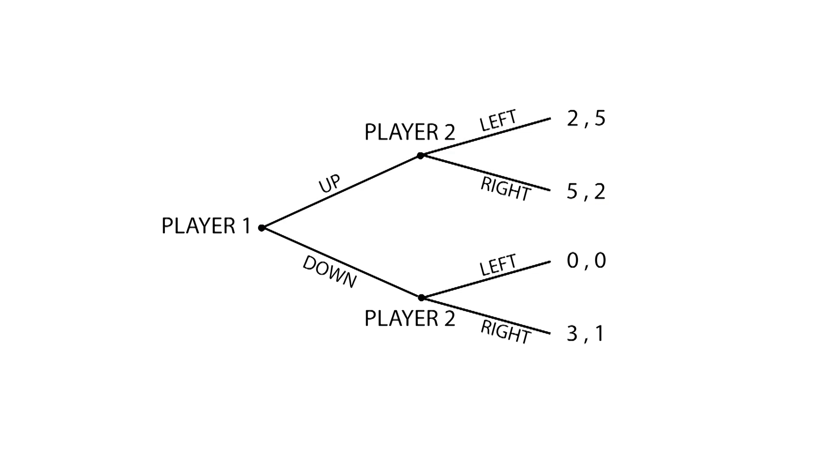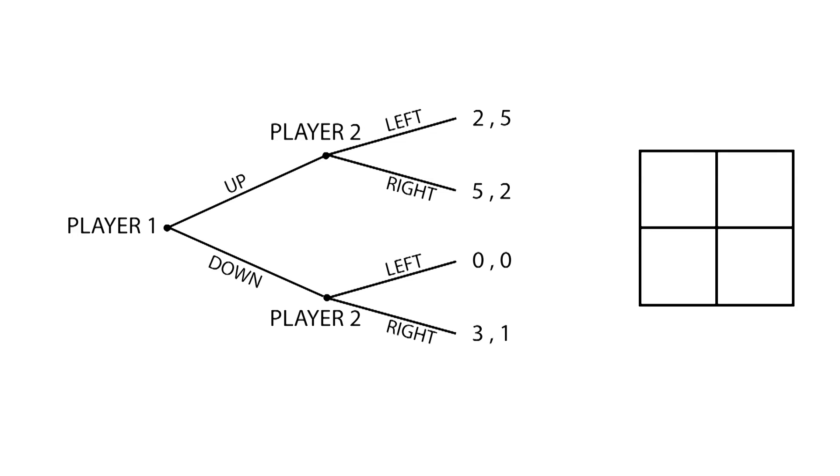We can also represent the game using the strategic form. Rows represent player 1 strategies, up and down, while columns correspond to player 2 strategies, right and left. If player 1 goes up and player 2 goes right, final payoffs are 5-2. Using this same procedure, we are able to fill out the entire matrix.